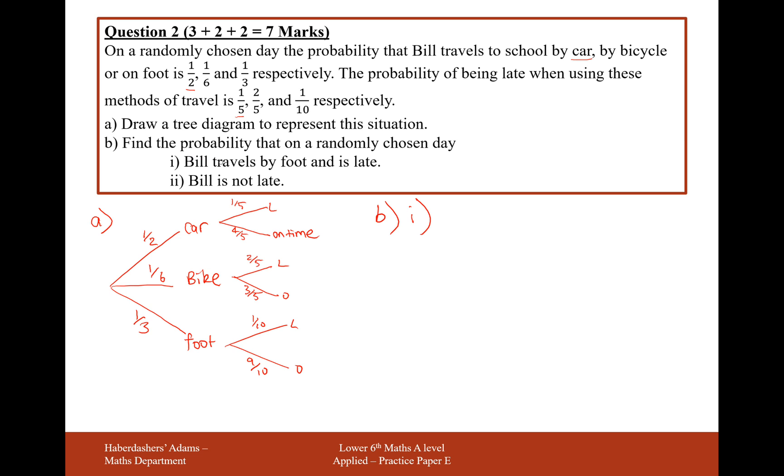Part B is Bill travels by foot and is late. So in that case here, we're going to go down the tree diagram, down the branch for foot, and along the branch for late. And we multiply along the branches. So it's a third for the probability of arriving by foot, and the tenth is the probability of being late. So this is one out of thirty, multiplying the fractions together here, top by top, bottom by bottom. And we get here one day out of every thirty.